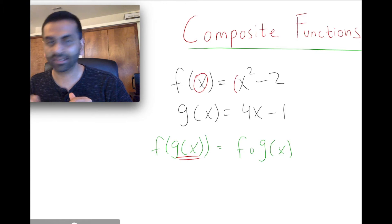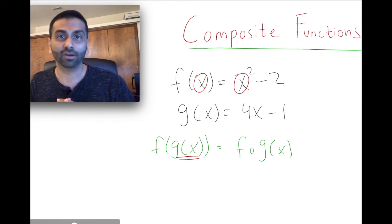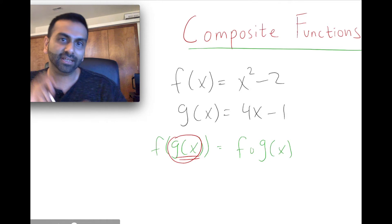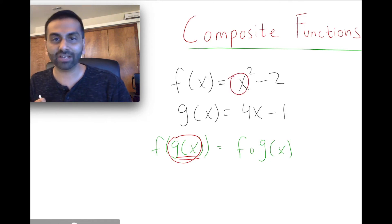We know f of x is x squared minus 2. If you were asked what's f of potato, it'd be potato squared minus 2. So really, when we're asked what's f of g, it's really whatever g of x is squared minus 2.